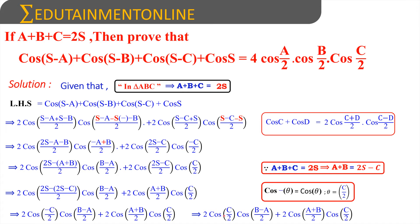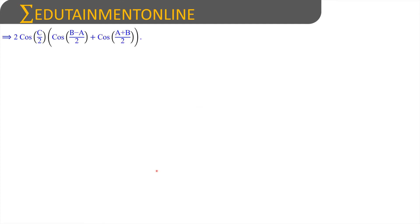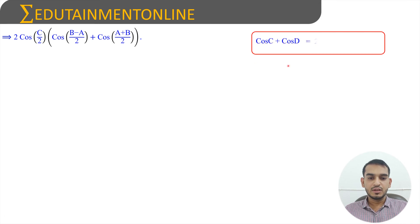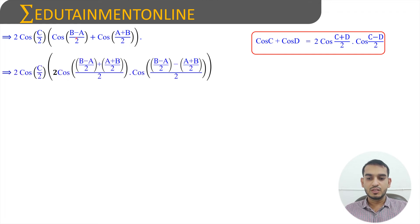Again, cos(-c/2) = cos(c/2) since cos(-θ) = cos(θ), where θ = c/2. Now we can take 2cos(c/2) common. The remaining two terms are cos((b - a)/2) + cos((a + b)/2), which are again in the form of cos C + cos D, with C = (b - a)/2 and D = (a + b)/2. Applying the formula: 2·cos((C + D)/2)·cos((C - D)/2).